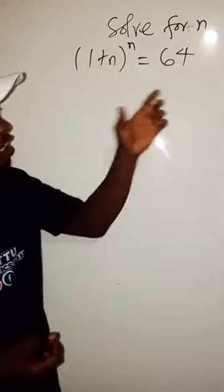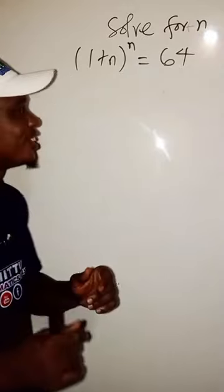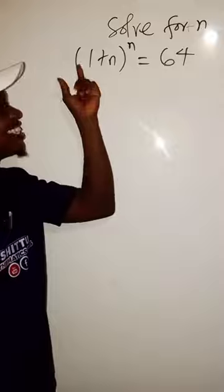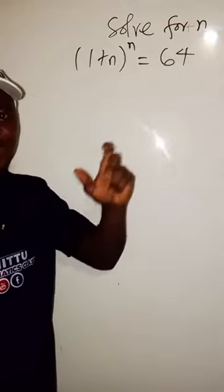Let's see how we are going to solve for the value of n in this equation. We have bracket 1 plus n to power n equals 64.